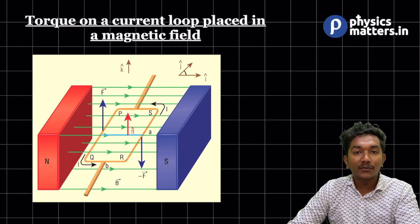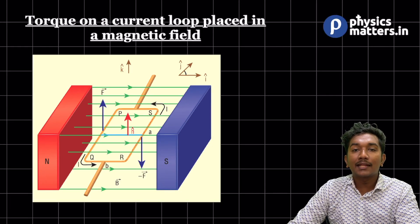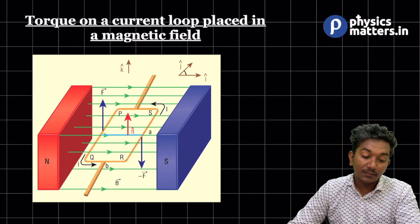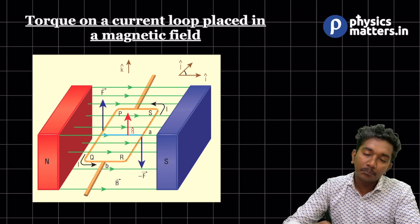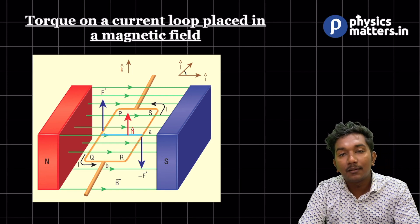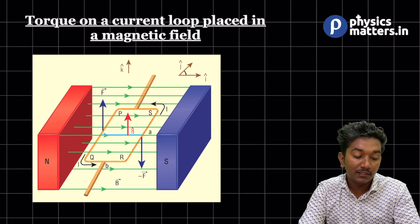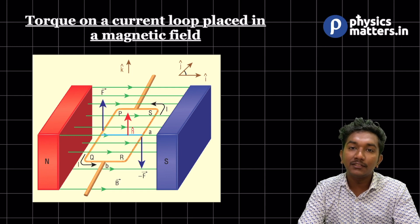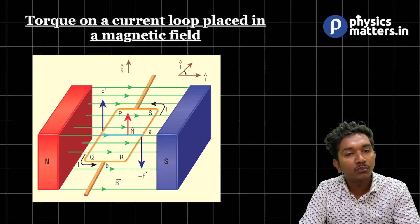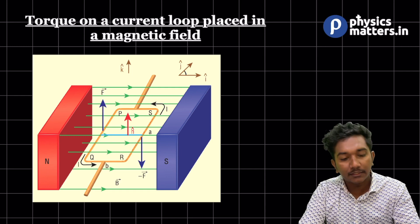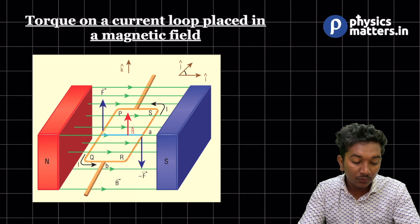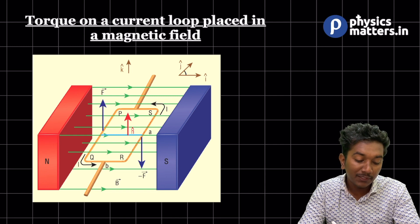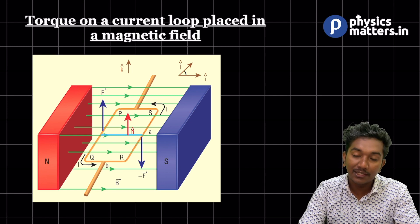Hello everyone. Now we are going to talk about the torque acting on a current loop placed inside a magnetic field. It's basically an easy derivation — we just need to go step by step. There is a loop called PQRS, as you can see clearly, and we are going to find out what is the torque acting on it.